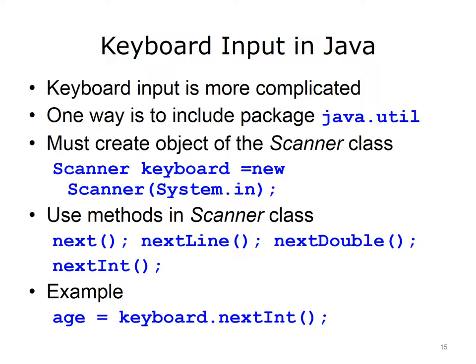Methods defined in the Scanner class will get input from the keyboard. These methods are: next, which gets the next string or word of characters; nextLine, which gets the next line of characters; nextDouble, which gets the next double value; and nextInt, which gets the next integer value. Because all these methods produce a value, use them wherever a value or expression is used, like in an assignment statement. In this case, the user assigns to the variable age the value returned by keyboard.nextInt(). To fully understand the Scanner class and how to use it, you need to understand object-oriented programming, which the last lecture of this unit addresses.